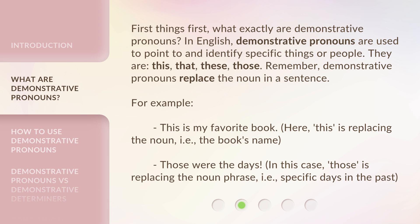For example, 'This is my favorite book.' Here, 'this' is replacing the noun — i.e., the book's name. 'Those were the days.' In this case, 'those' is replacing the noun phrase — i.e., specific days in the past.